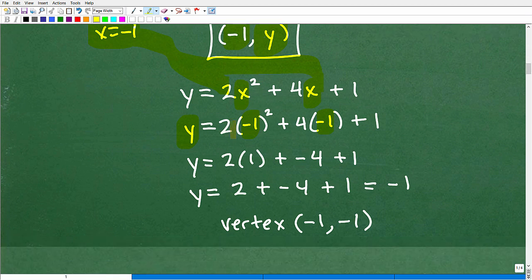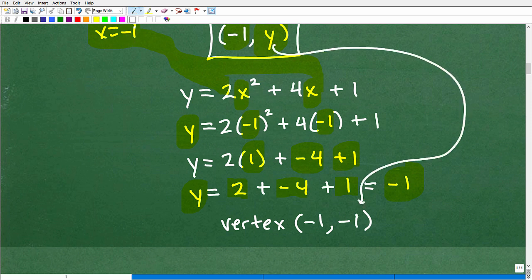So 2 times negative 1 squared. Negative 1 squared is positive 1 plus 4 times negative 1. That's a negative 4 plus 1. So 2 times 1 is positive 2. Negative 4 plus 1. If you know your positive and negative numbers very good, which you should, you'll see that Y is equal to negative 1, and that's it. So our Y coordinate down here is also negative 1.